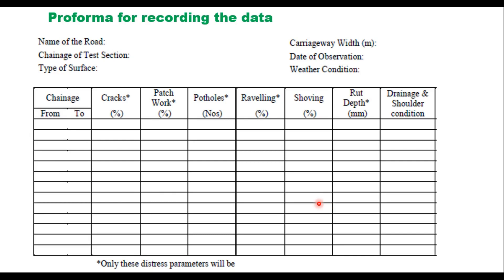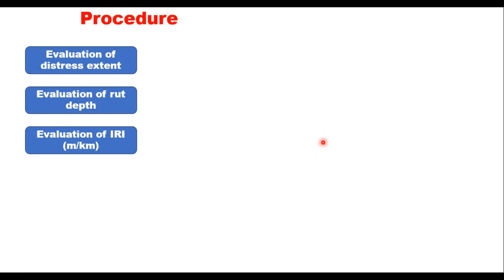IRC 82 has also provided a proforma for recording distress data, including percent cracks, percent area cracked, percent area patched, potholes in number, raveling in percent, rut depth, drainage, and shoulder conditions. Bleeding and drainage are not considered for PCI calculation but are recorded as indicators of pavement condition. This leads into the procedure for determination of the overall pavement condition index.